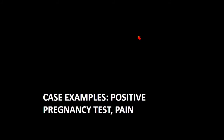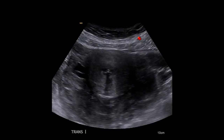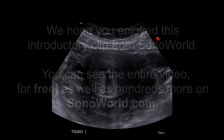I'm going to start out with a case example. Here's a transabdominal ultrasound — positive pregnancy test, pain and bleeding. This is the uterus, this is an IUD, and there's all of this stuff around the outside of the uterus.